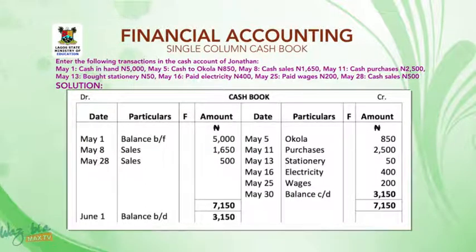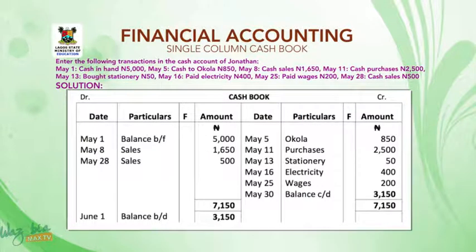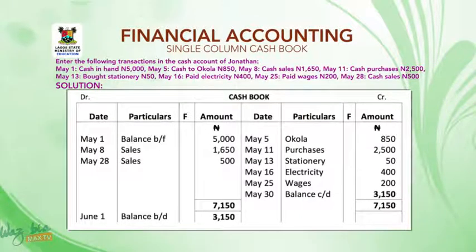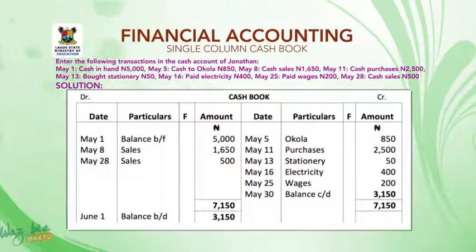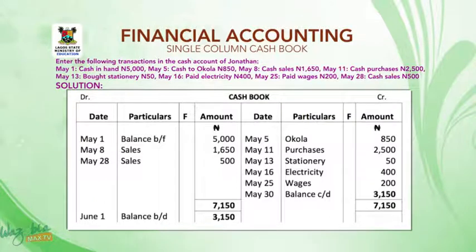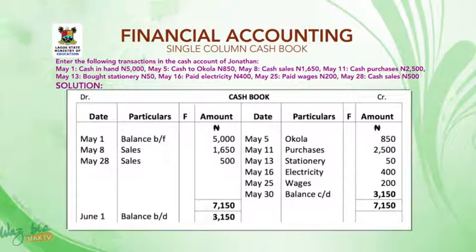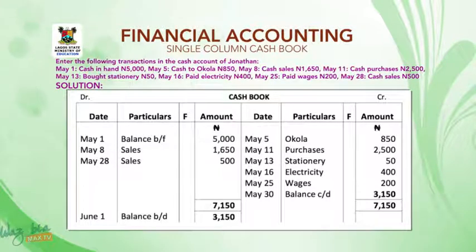On the left-hand side you have the debit side, which is the receipt side. On the right-hand side you have the credit side, which is the payment side. In the middle of this format, you write cashbook, cash account, or single-column cashbook as the heading. Remember, on both the debit and credit sides, you have four columns: date, particulars, folio, and amount. The symbol of the currency will be written under the amount column on both sides.